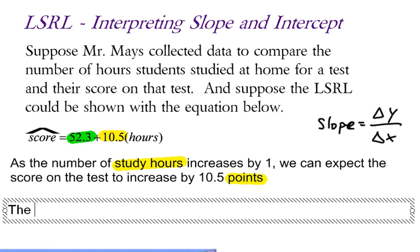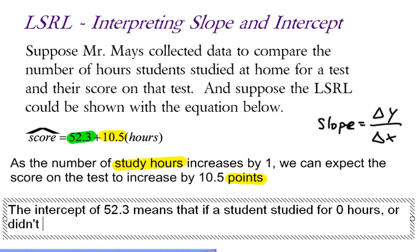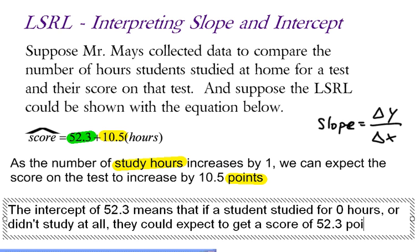So I would say this. The intercept of 52.3 means that if a student studied for 0 hours or didn't study at all, they could expect to get a score of 52.3 points.